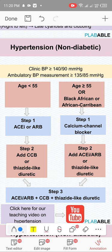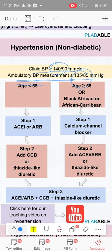Hypertension: BP greater than 140/90 clinically, or ambulatory/home BP greater than 135/85. People developed white coat hypertension — BP high at the doctor but normal at home — so home monitoring devices were devised. If clinical BP is greater than 140/90 or ambulatory/home BP is greater than 135/85, that is Stage 1 hypertension.